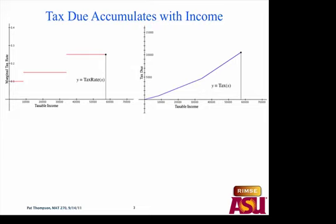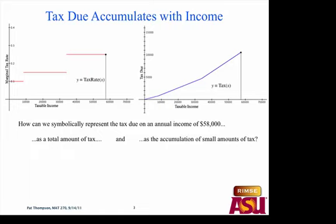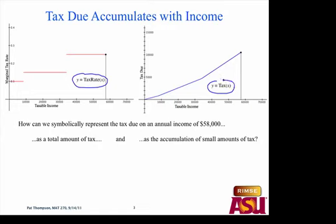We've been talking about the tax due accumulation function. My question is, how can we symbolically represent the tax due on an annual income of $58,000? We've stopped the animation at $58,000. We can represent the tax due two ways: as a lump sum total amount at the end of the year, or as the accumulation of small amounts of tax. Here's the tax rate function, and here is the tax function.